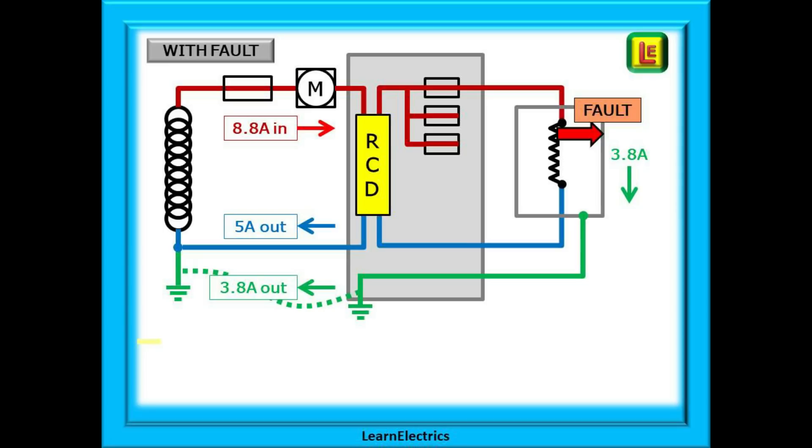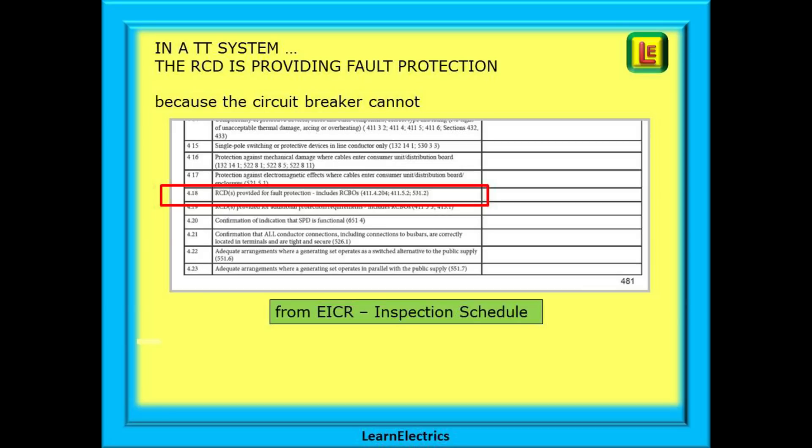You might suggest that with 8.8 amps of current along the line conductor that a 6 amp MCB would trip, but this is not the case. A 6 amp type B breaker needs at least 30 amps of fault current to operate within the required time for safety. And types C and D are even worse. The truth is that even a 6 amp breaker is not going to give earth fault protection. Only an RCD device is going to do this. In a TT system, the RCD is providing fault protection and not additional protection. We are relying on the RCD to do the job that a circuit breaker cannot do in this TT system. And the RCD will certainly meet the required disconnection times for safety.